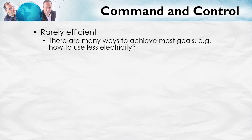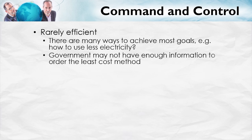Now, if we want to cut back electricity consumption by, say, 10%, we want to cut back on the 10% of electricity uses which are least valuable. We want to reduce electricity use in the way which is least costly. The problem is, out of all of the millions and perhaps billions of ways of reducing electricity, is government going to command and control us to reduce electricity in the least cost way? Probably not. Government simply does not have enough information to order the least costly method of reducing electricity consumption.